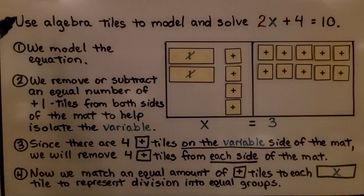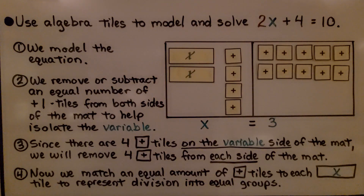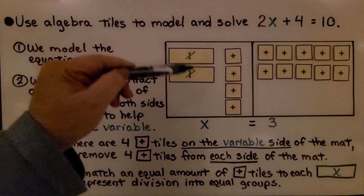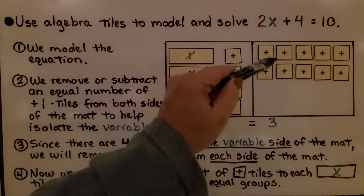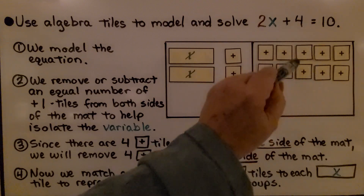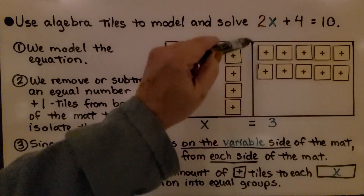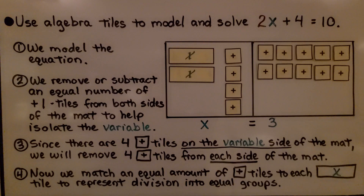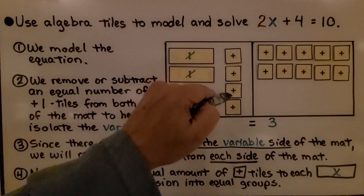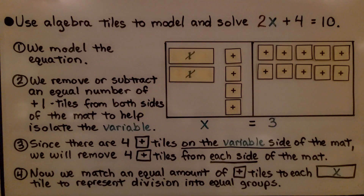We're told to use algebra tiles to model and solve 2x plus 4 is equal to 10. First, we model the equation: we have 2x plus 4 is equal to positive 10, so we place 10 positive square tiles on the right-hand side. This line represents the equal sign. We then remove or subtract an equal number of plus-1 tiles from both sides of the mat to help us isolate the variable.